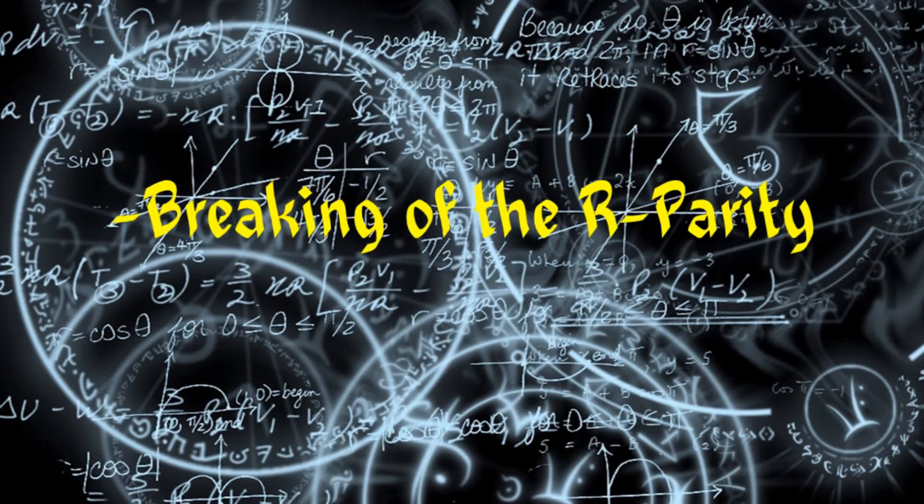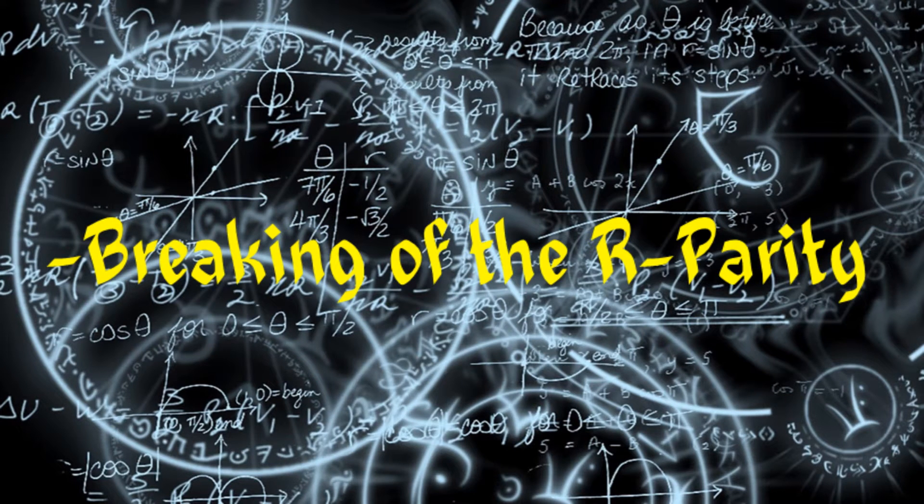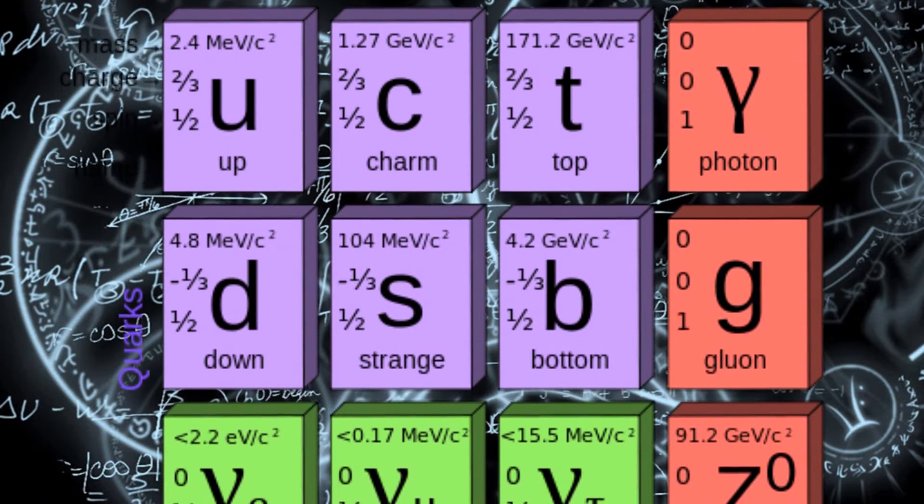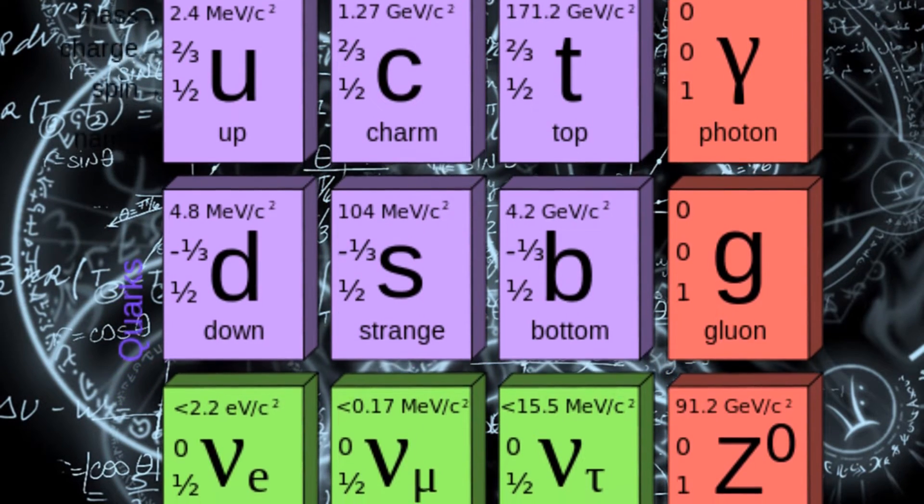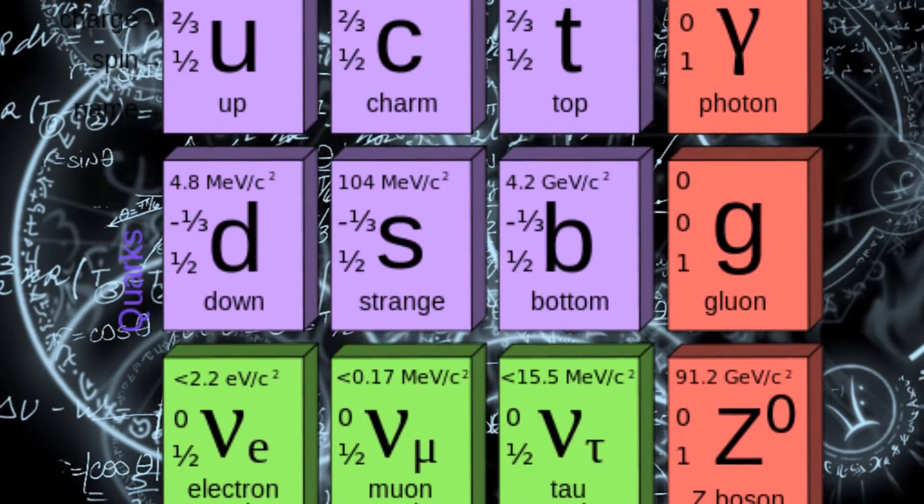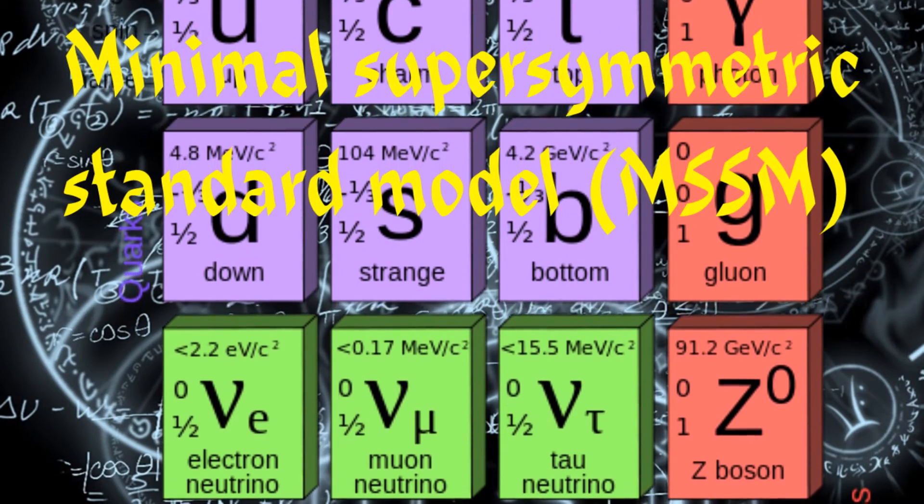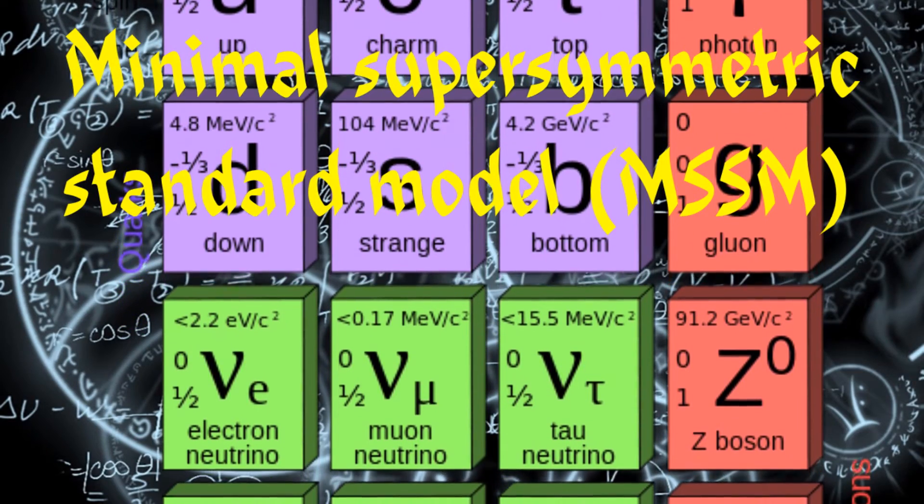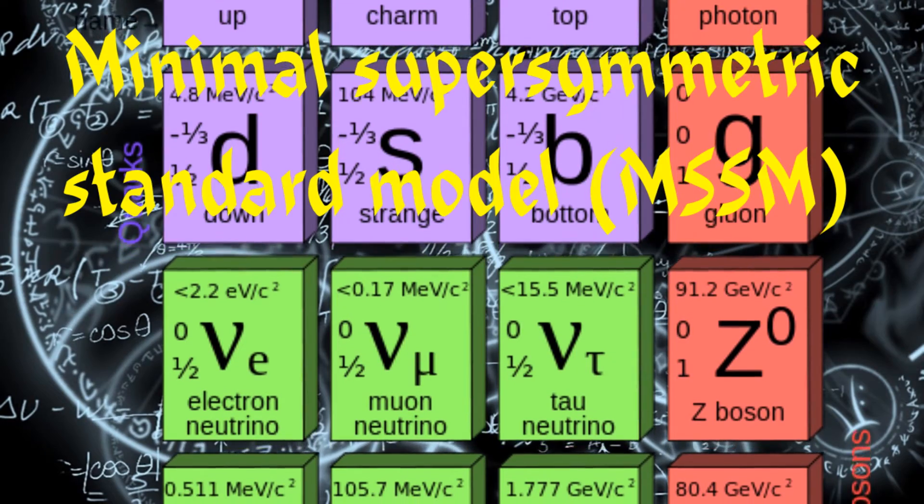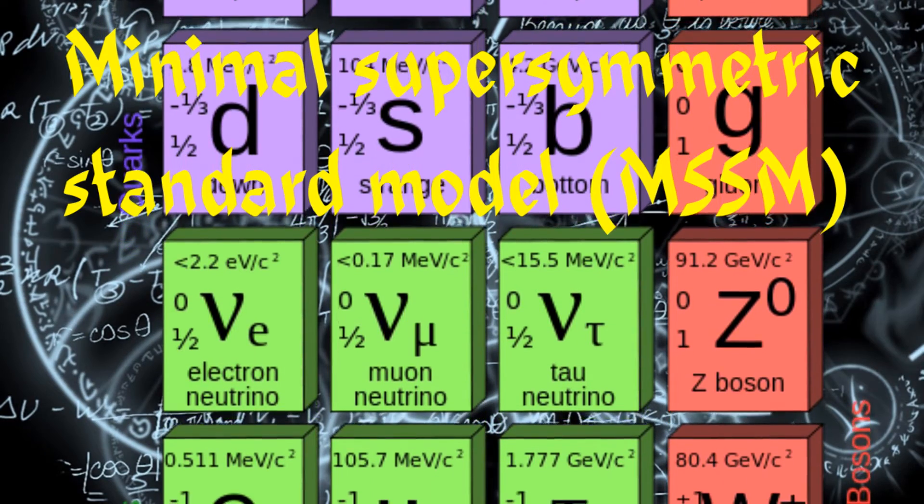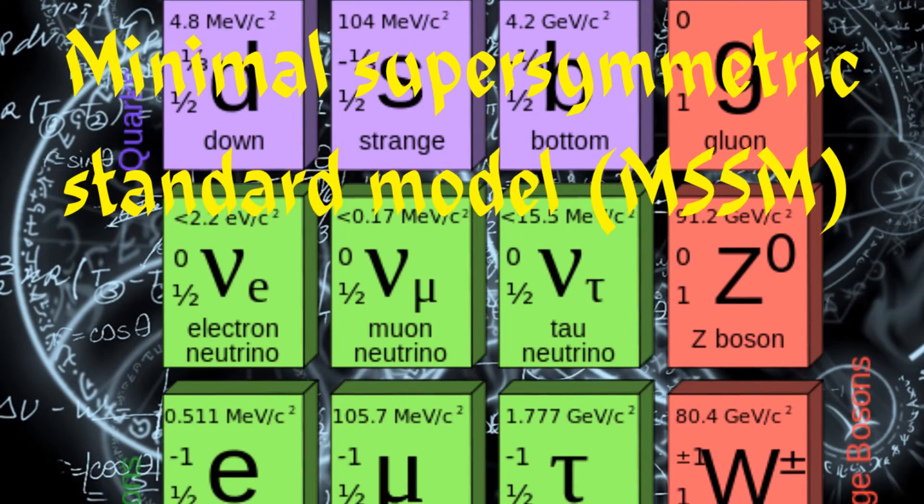Assuming the neutrino has Dirac mass, let's go over the breaking of the R-parity. We're all familiar with the standard model. The world of particle physics contains something strange though. It's called the minimal supersymmetric standard model, or MSSM for short. It's the extension of the standard model that includes supersymmetry. Supersymmetry pairs bosons and fermions.